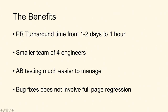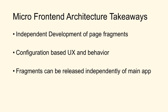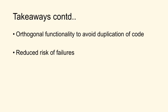One key benefit for large teams is that PR turnaround came down to one hour from one to two days, because we have a small team of engineers who know both the context and the technical aspects. A/B testing was a whole lot easier because we manage all the toggle flags within the fragment at the fragment level. The most important aspect was that a bug fix at the fragment did not require a full page regression on the host app — it just required the fragment to be fully regressed.